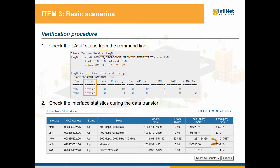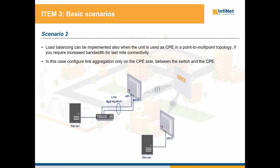We'll now walk through a couple of practical scenarios that each bring along specific benefits, so we can get a picture about the multitude of solutions that can be adopted for load balancing and redundancy. First, a short mention about the fact that you can also implement load balancing for hardware 11 products when those are used as CPEs in a point-to-multipoint topology. This is in case you require increased bandwidth for the last mile connectivity. You just have to configure link aggregation on the CPE side between the switch and the CPE.